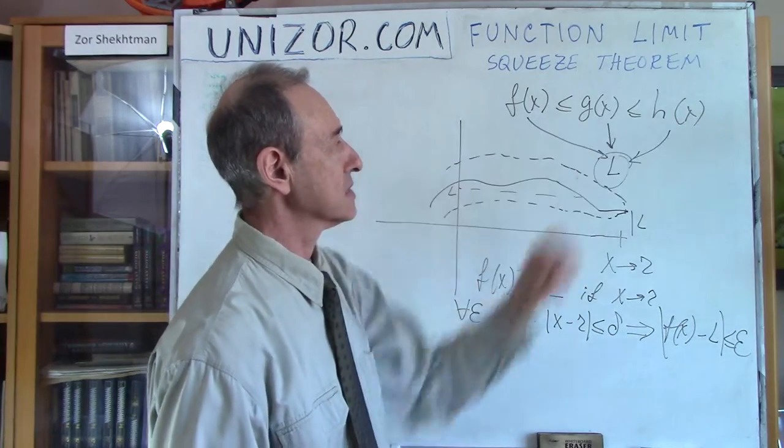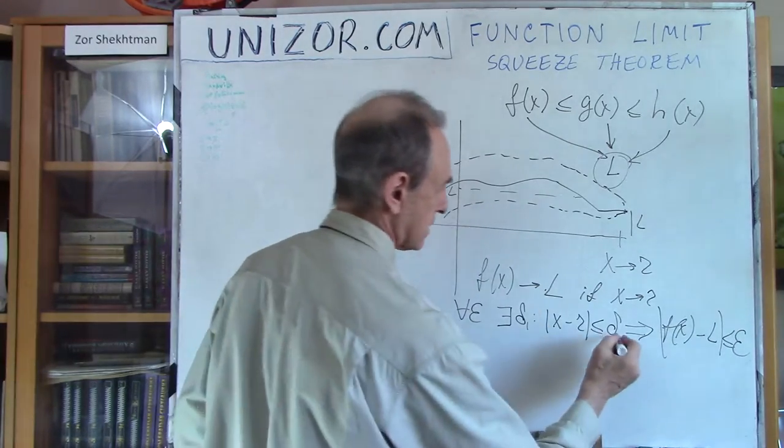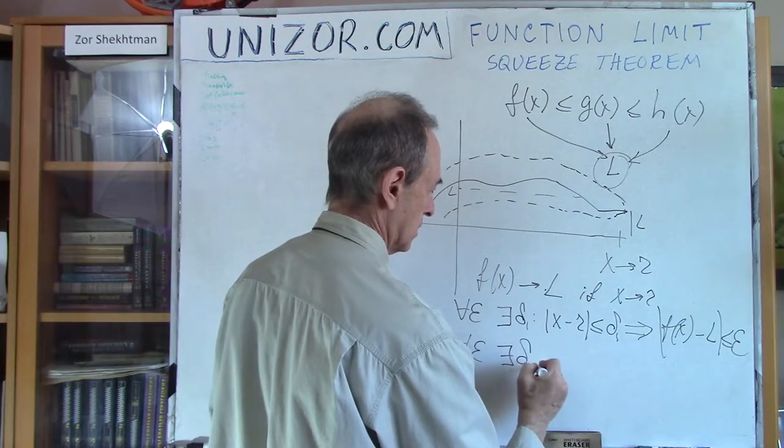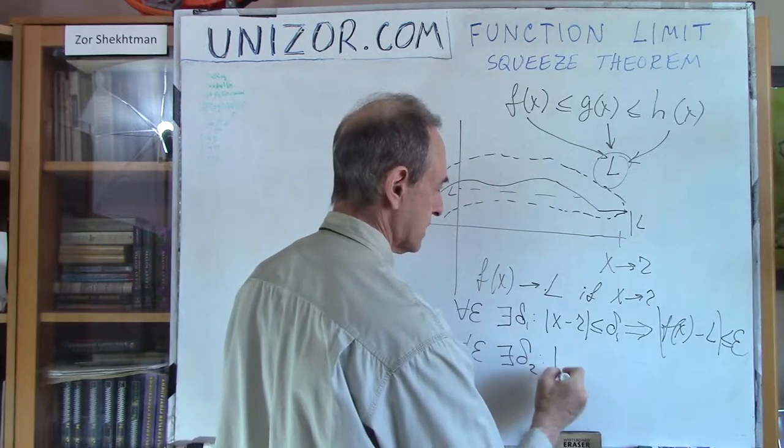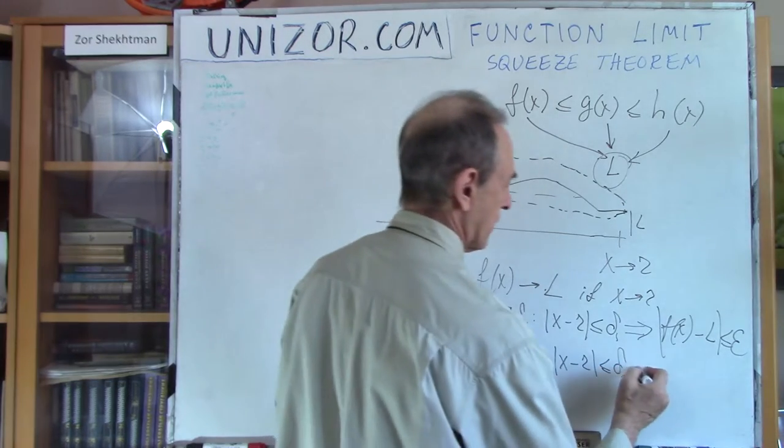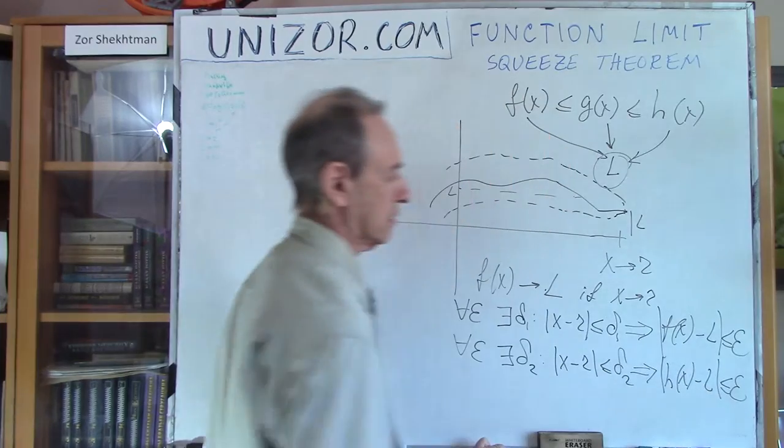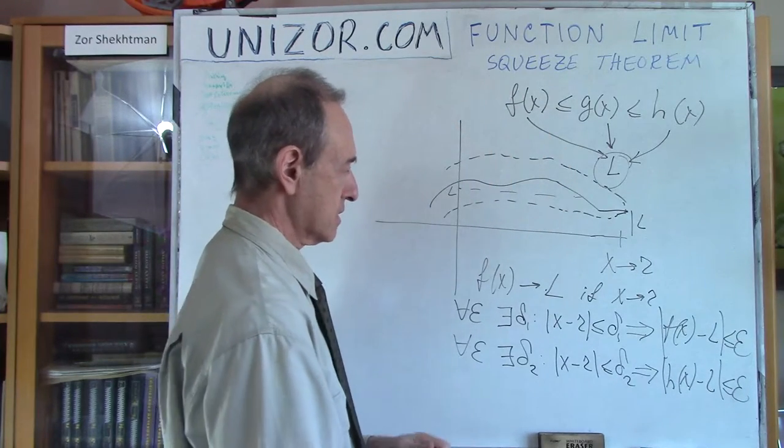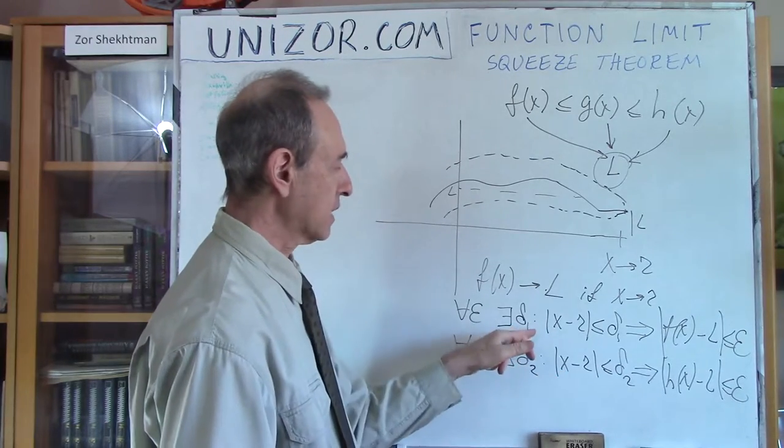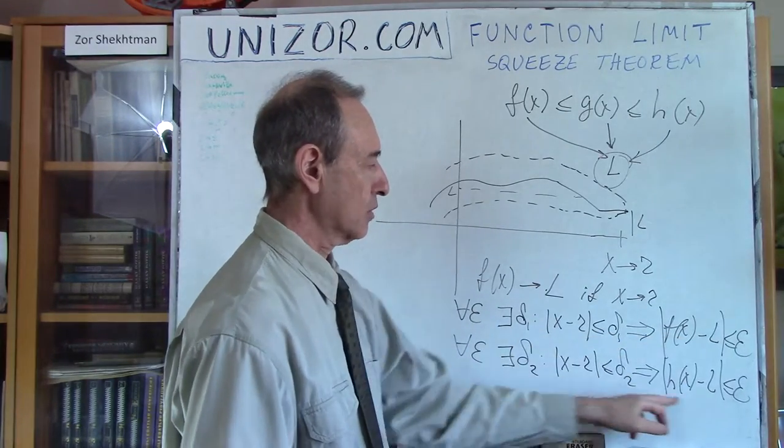And now I can say exactly the same that there is a delta 2 such that if x is in the delta 2 neighborhood of r then the function h also would be within epsilon neighborhood of l. So for any epsilon no matter how small it is I can always find delta 1 and delta 2 such that this is from this follows this and from this follows this.